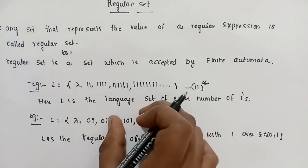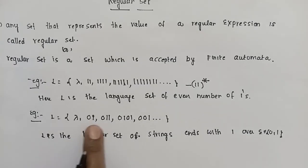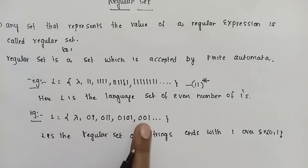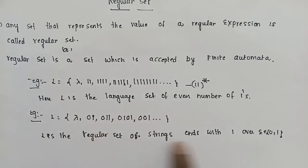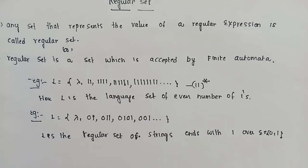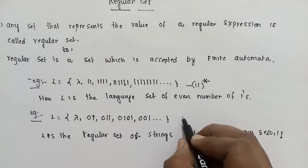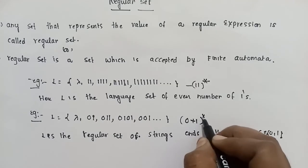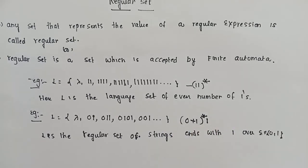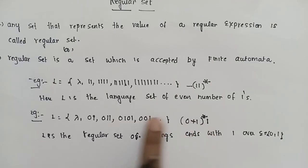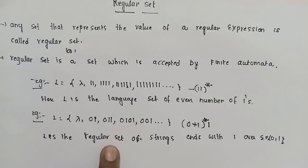The regular set is used to form a set of elements, for example: lambda, 0, 1, 01, 10, 10. L is the regular set of strings that ends with 1 over the input sigma {0,1}. The regular expression is used to form a set of elements, and our set of strings is used to form a regular set.